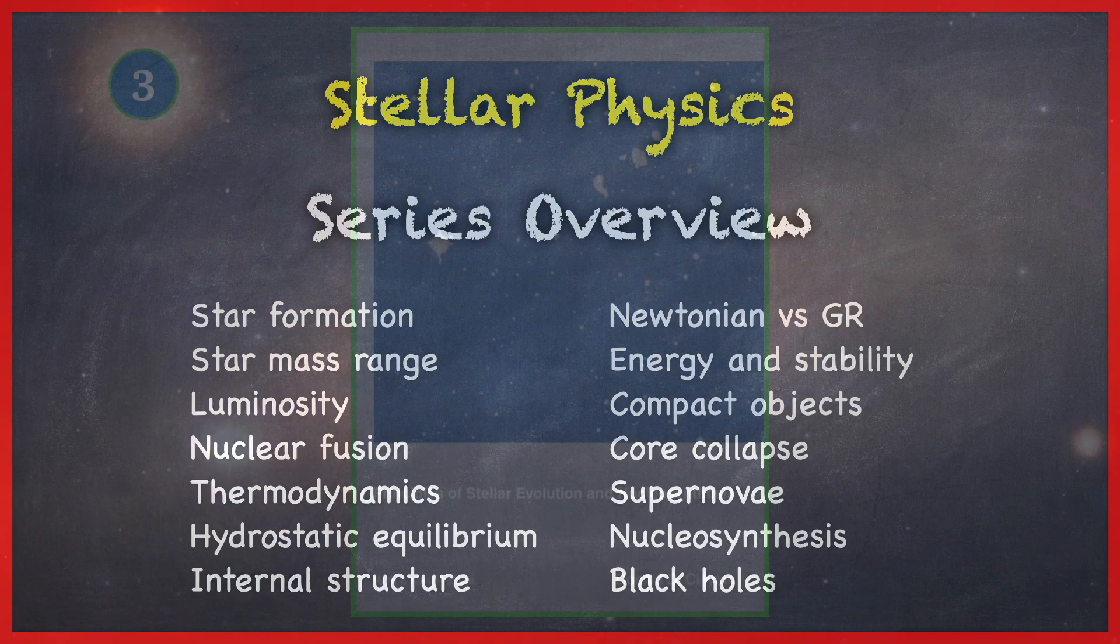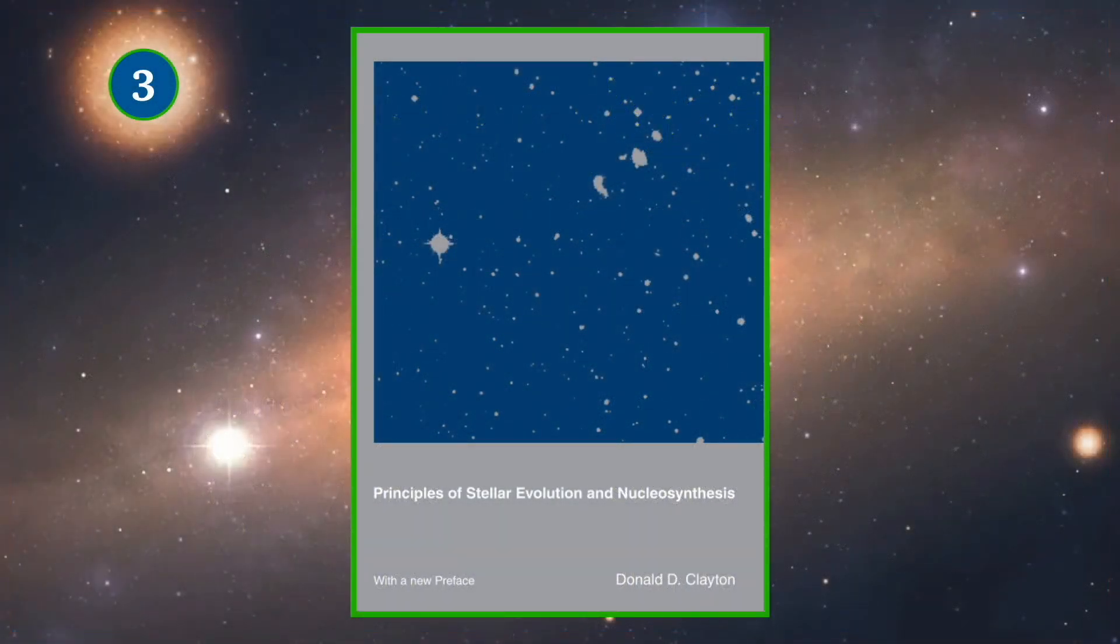So, at number three, we have Principles of Stellar Evolution and Nucleosynthesis by Donald Clayton. This book basically covers everything you need to know about stellar evolution and is primarily focused on nuclear evolution in stars. But it has all the other physics as well, because in order to understand the nuclear physics, you have to also understand everything else that's going on inside the star.